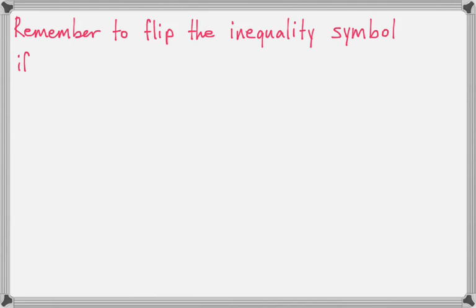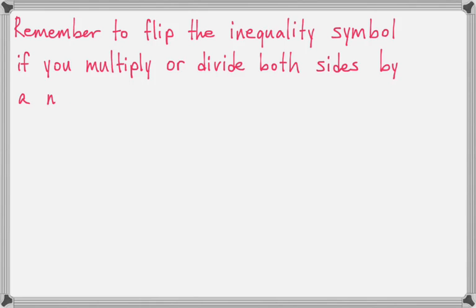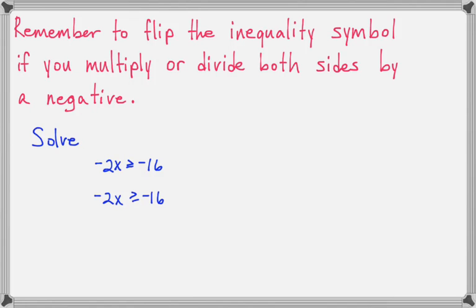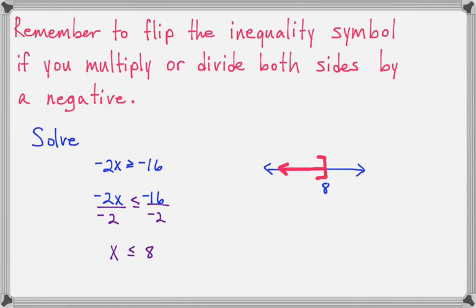Remember, you must flip the inequality symbol if you multiply or divide both sides by a negative — and we're going to see that here. Let's solve: negative 2x is greater than or equal to negative 16. We divide both sides by negative 2, and as soon as we divide by a negative, we must flip the symbol. Now we have x is less than or equal to 8. We shade to the left of 8, use a bracket, interval notation is from negative infinity to 8 bracket, and set builder notation is all x's such that x is less than or equal to 8.